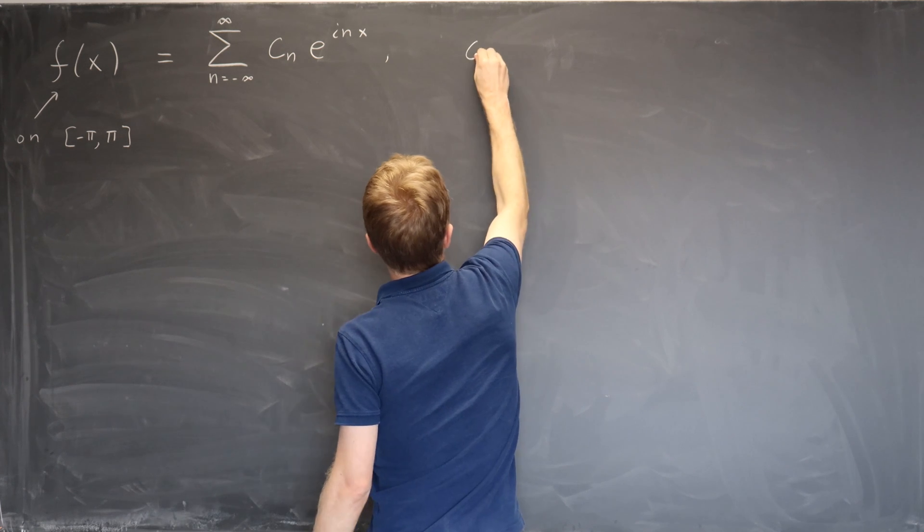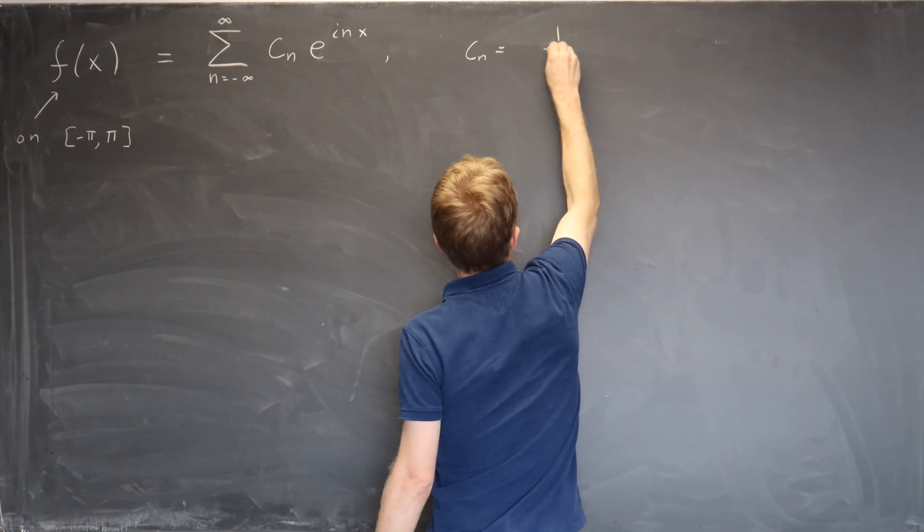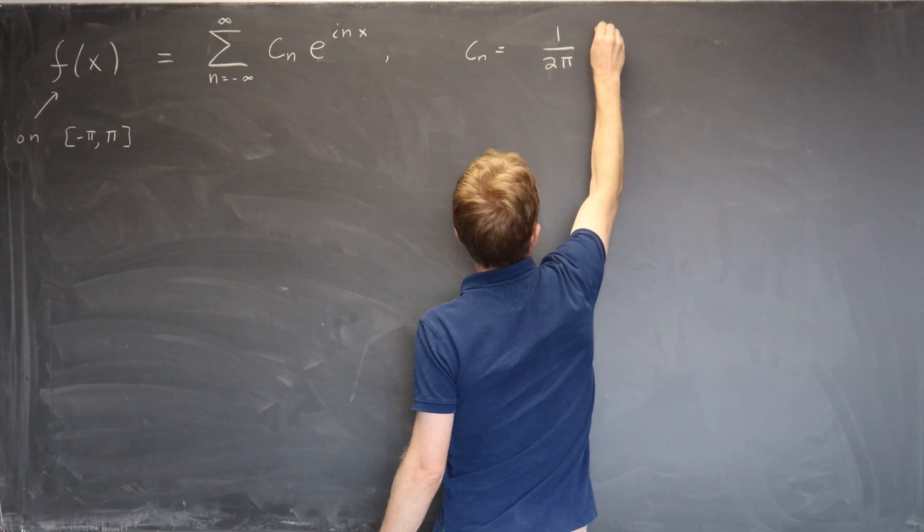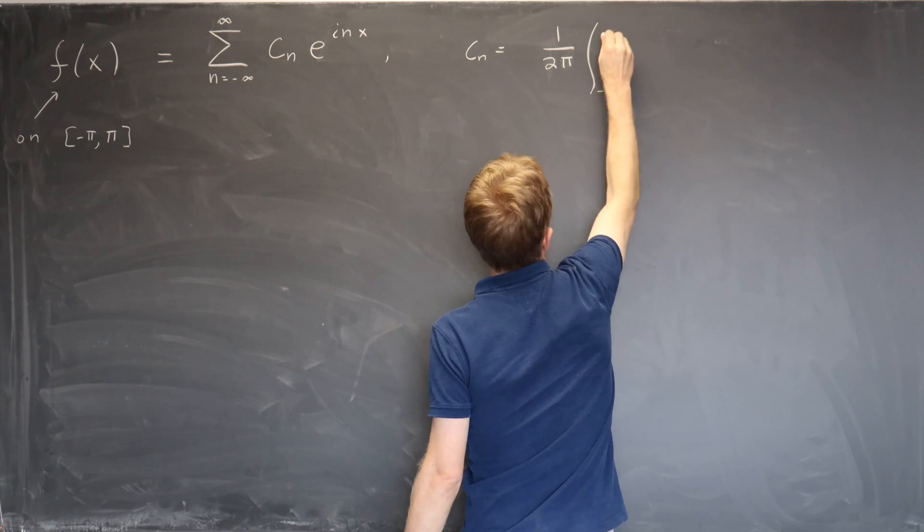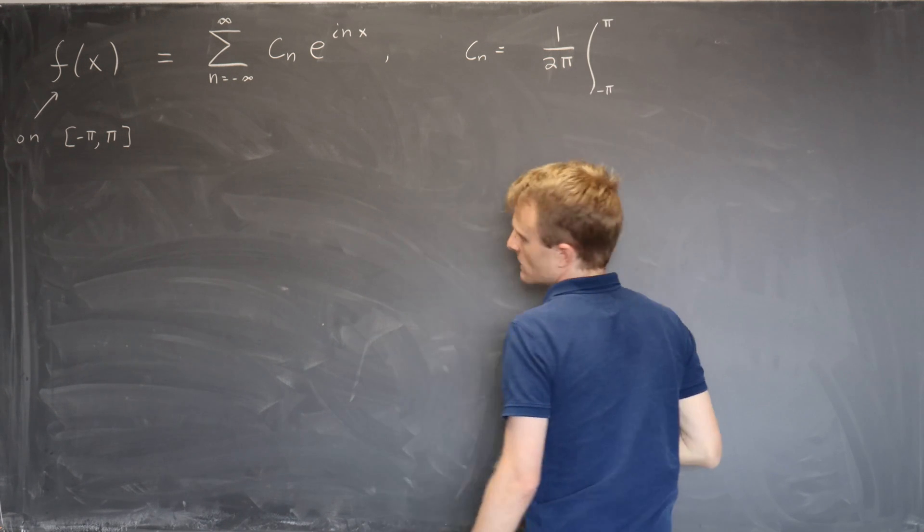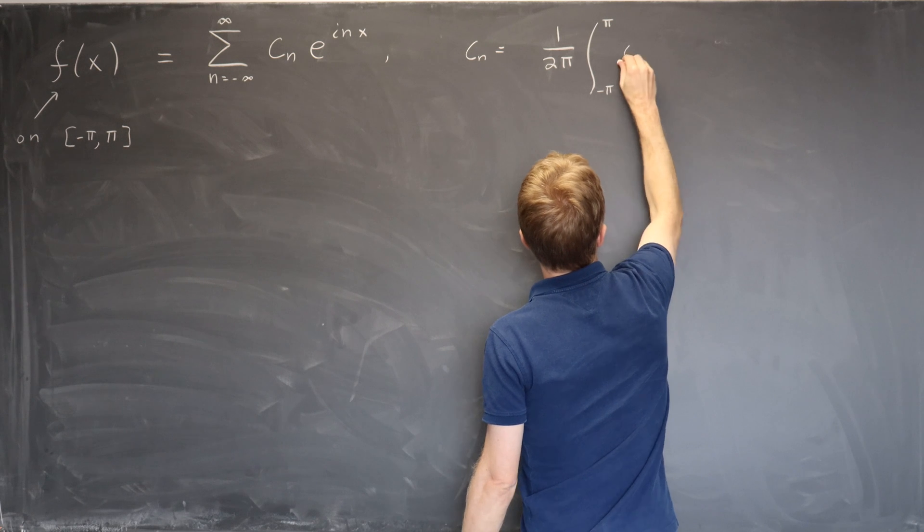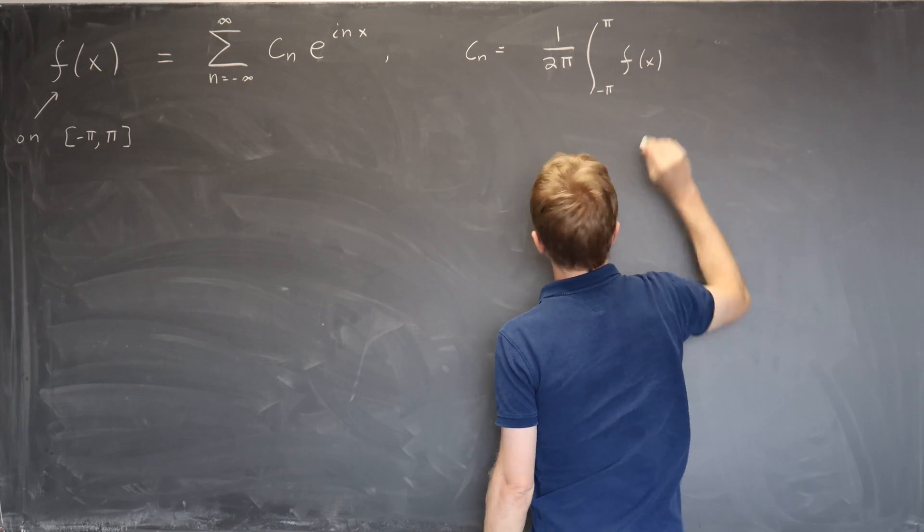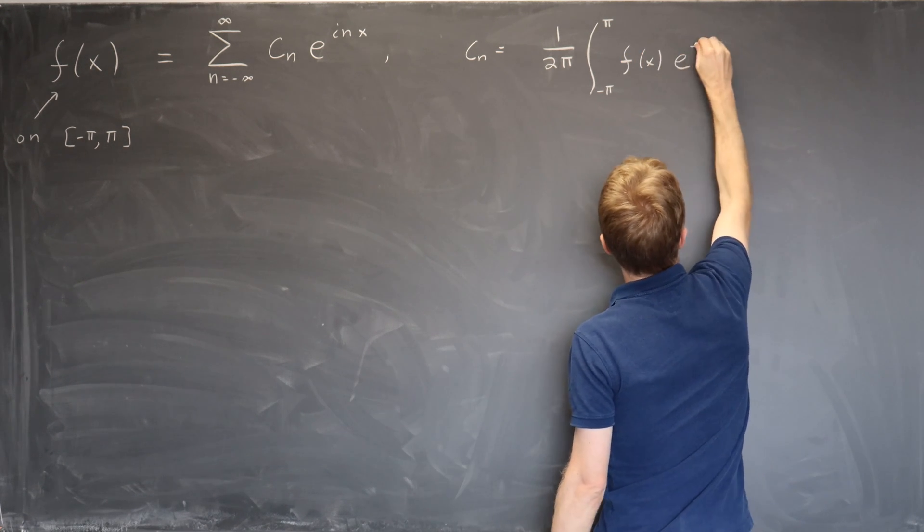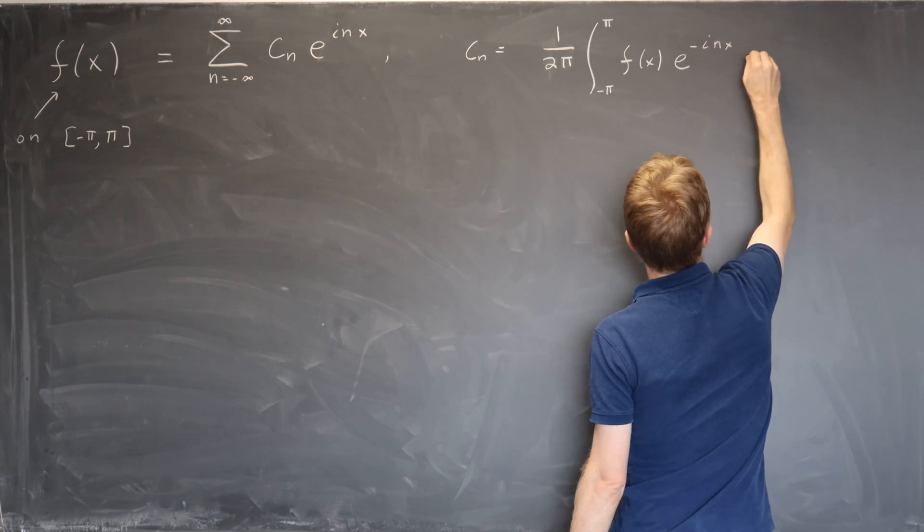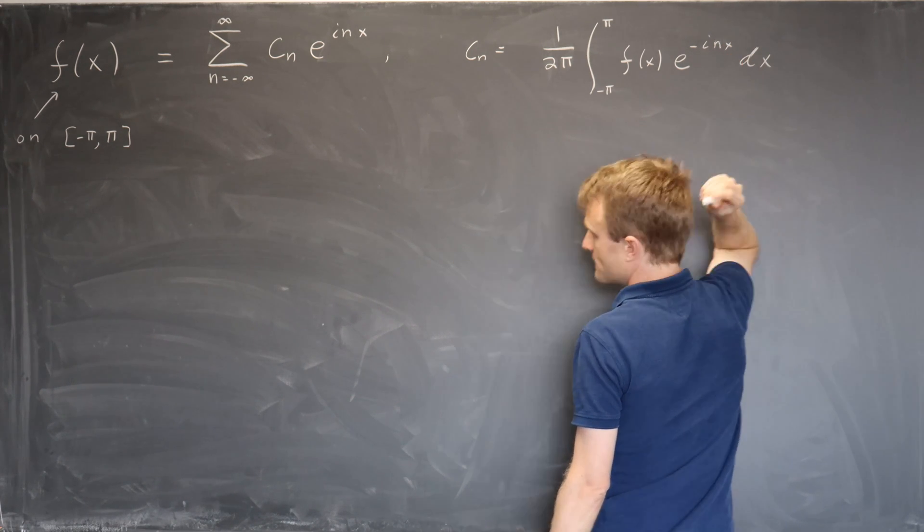And the formula for the coefficients is an integral from minus pi to pi, the domain over which we are working, of the function we are writing in a series times e to the minus inx dx.